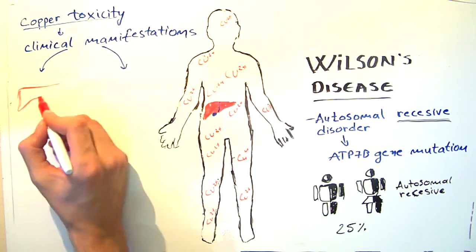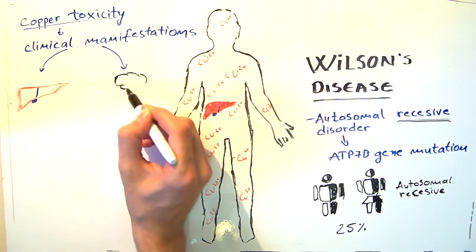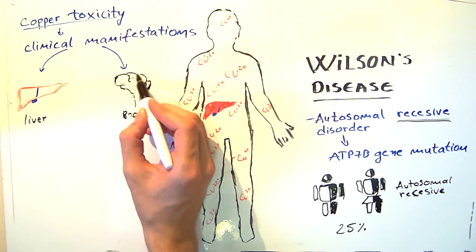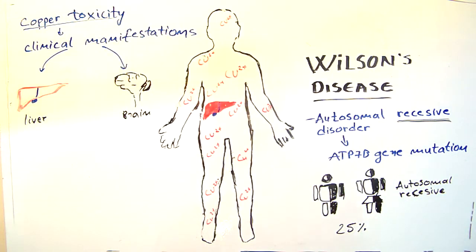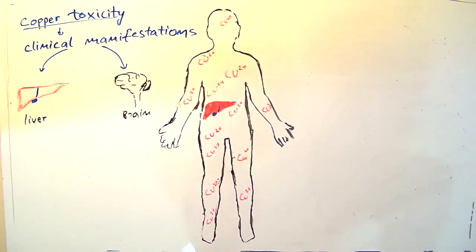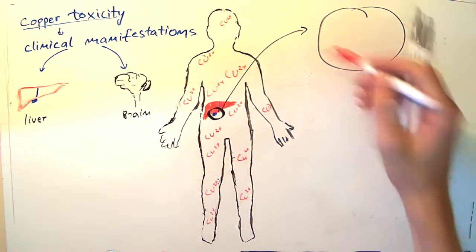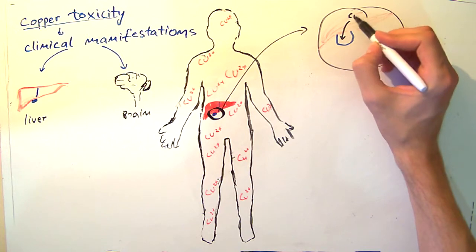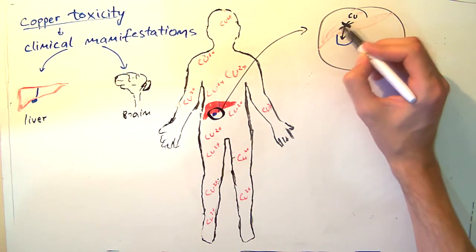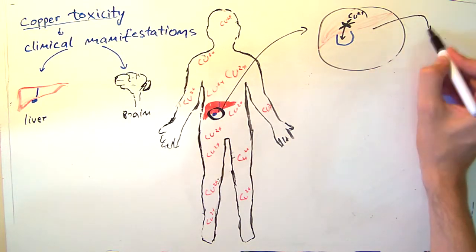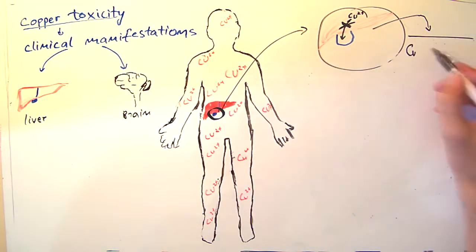It primarily involves the liver and the brain. Because effective treatment is available, it is important to make the diagnosis early. If we zoom in a little and draw the liver and the gallbladder, we can see a defect in the path of copper from the liver to the biliary tract, or a defect in the copper excretion. As a result, there will be copper accumulation and copper toxicity.